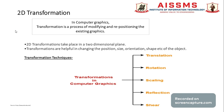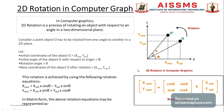In this session we will see the rotation transformation — how rotation works in 2D. In computer graphics, 2D rotation is the process of rotating an object with respect to an angle in a two-dimensional plane. A 2D rotation is applied to an object by repositioning it along a particular path within the XY plane. To generate a rotation, we specify the rotation angle theta and the position of the rotation point about which the object is to be rotated.